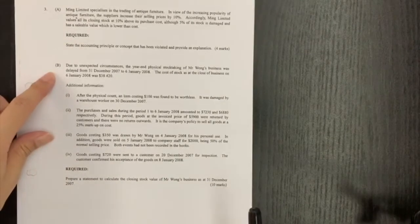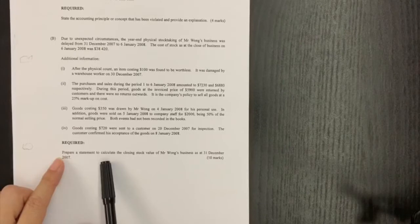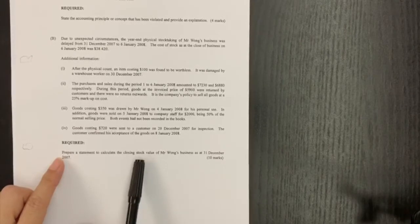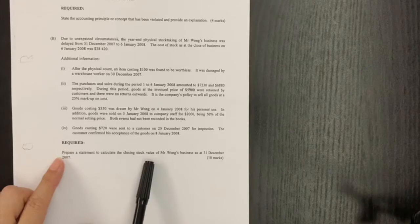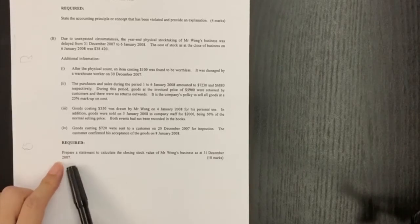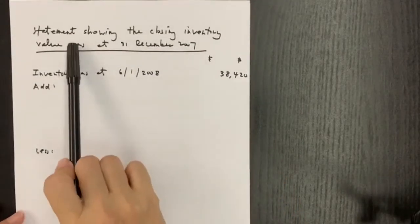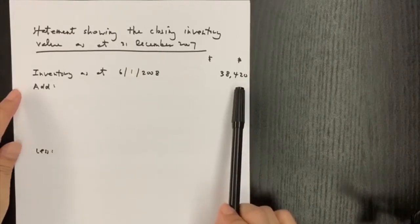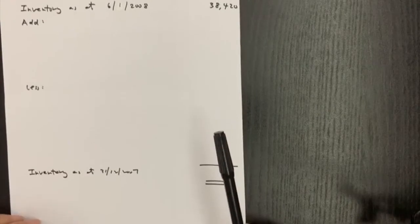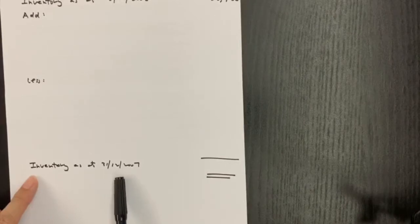Here is the question in 2018 and we will look at question 3b first. We have to prepare a statement to calculate the closing stock value. The updated name for stock is inventory, so I'm going to change the name to 'statement showing the closing inventory value as at 31st December 2007.' So this is the figure given to us to begin with, and the final answer will be the value of inventory as at the financial year end on 31st December 2007.